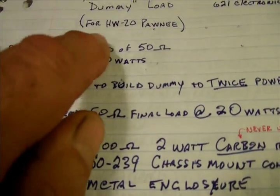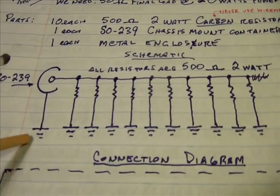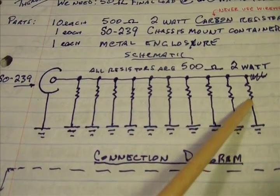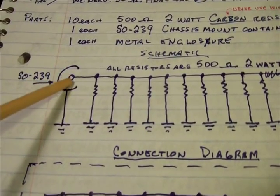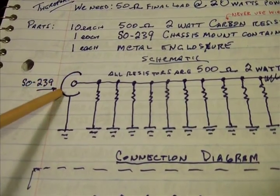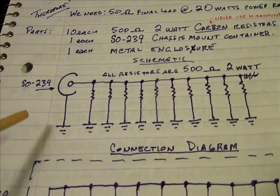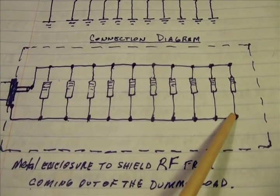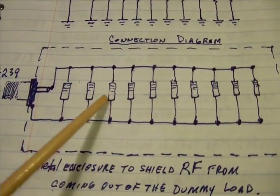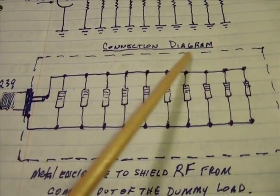And that gave me the values I needed. Here is the schematic, a string of resistors in parallel, your connector, center, outer, and all grounded. Here is the layout. Parallel, a string of parallel resistors, the connector, and the enclosure.